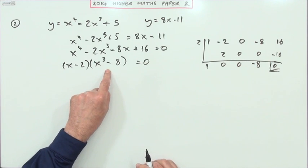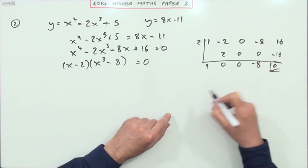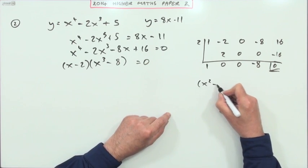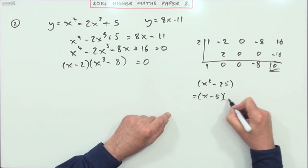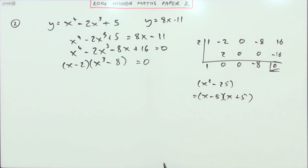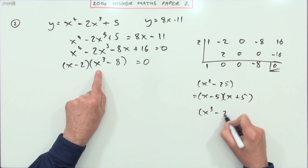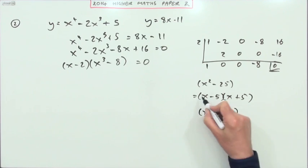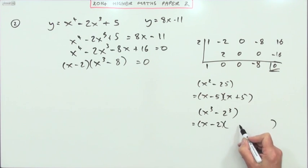Now, this one is the difference of 2 cubes. You know the pattern for the difference of 2 squares. If I had something like x squared minus 25, that becomes x minus 5, x plus 5. Well, there's a similar pattern for the difference of 2 cubes, because what I've got here is x cubed minus 2 cubed, and it's the same as this in that it'll start off with x minus 2,